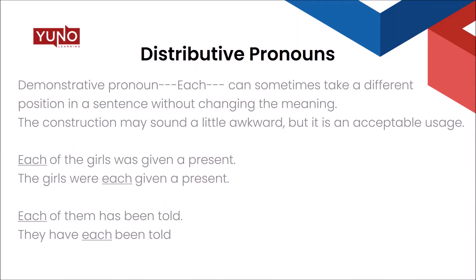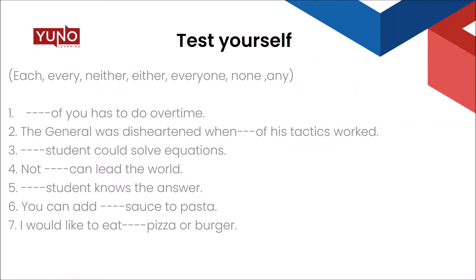After this information about distributive pronouns, we have a small quiz to test our understanding. The distributive pronouns to be filled in are written in brackets. First: '__ of you has to do overtime.' The answer is: 'Each of you has to do overtime.' Though we are referring to the group, we are addressing them as individuals.